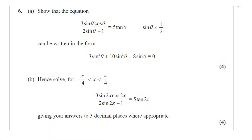Question number 6, Part A. Show that the equation 3 sin θ cos θ divided by (2 sin θ − 1) equals 5 tan θ can be written in the form 3 sin³θ + 10 sin²θ − 8 sin θ = 0. The question carries 4 marks.